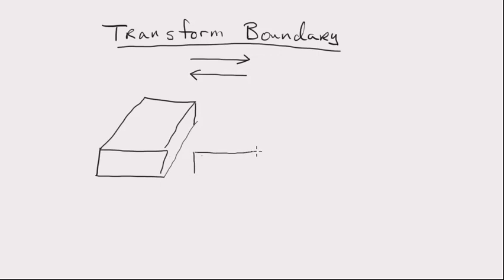Transform boundary doesn't converge, or go into each other, or go apart from each other. They kind of slide parallel to each other. So, if I had a plate like this, if we're looking at this as a tectonic plate, and then we had another plate right next to it, like this. Just to show you that these are two different plates.